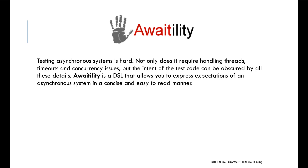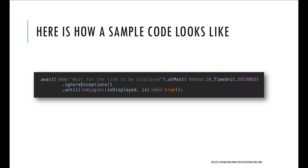Awaitility is a library — more like a DSL — and you can also achieve the expected expression in a much easier fashion. It is asynchronous and also helps to wait for an asynchronous system. We are going to write code using Awaitility, which is going to look something like this: it has an await method with a message saying 'wait for the link to be displayed', and it has a method called atMost where you can specify how long to wait — like 20 seconds.